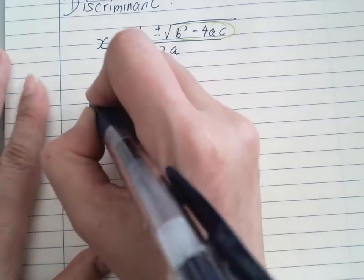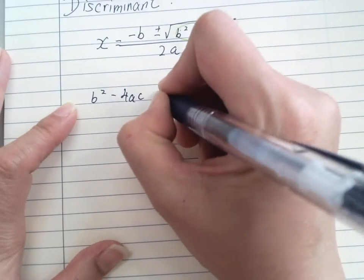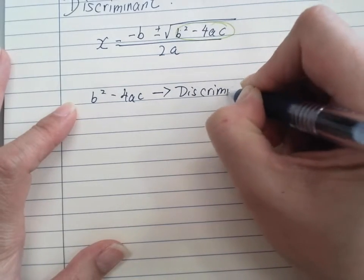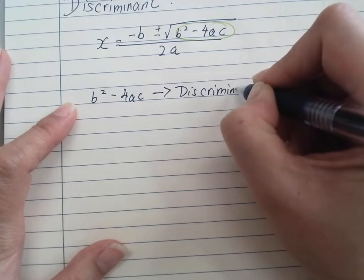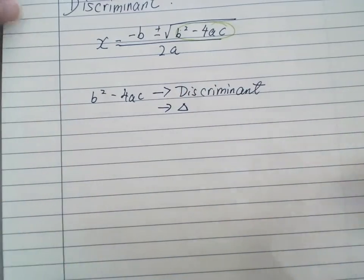To help us a little bit, we call this b squared minus 4ac the discriminant, which also be used by the triangle. We call it delta.